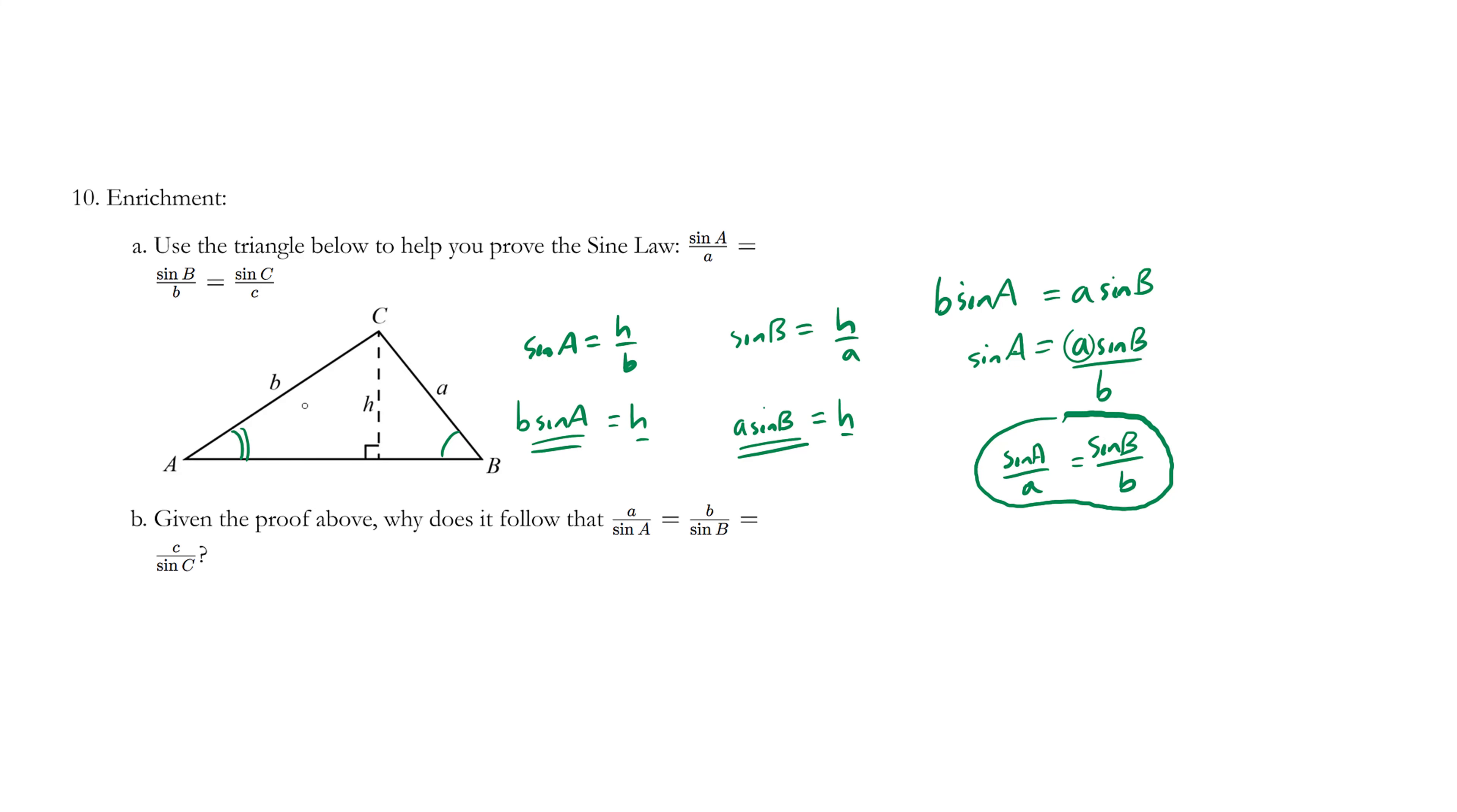You can draw a different triangle to draw the H, not between A and B, but two different angles to make the conclusion that sine C over C is equal to sine B over B, which is equal to sine A over A.